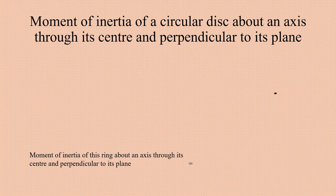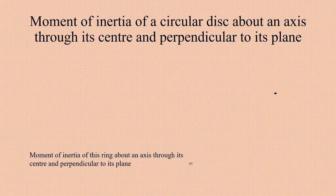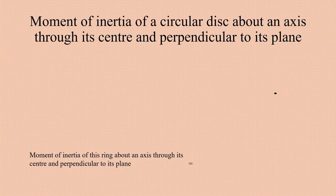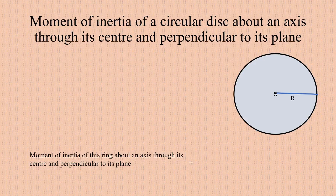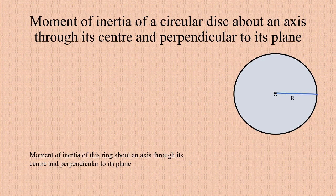We have a circular disc of mass M and radius R. In the case of a circular disc, the mass is distributed over the entire surface. To find the moment of inertia of this disc, we assume that the disc is made up of a large number of small rings — annular rings — of very small width, with radii gradually increasing from 0 to R.